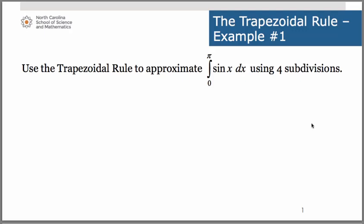Let's take a look at an example of how to use the trapezoidal rule to approximate an area under a curve. Here we want to approximate the integral of sine of x dx from 0 to pi, and we're going to use four subdivisions to do that.